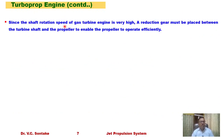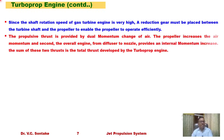Since the shaft rotation speed of a gas turbine engine is very high, a reduction gear must be placed between the turbine shaft and the propeller to enable the propeller to operate efficiently. The propeller thrust is provided by dual momentum change of air: the propeller increases the air momentum, and the overall engine from diffuser to nozzle provides an internal momentum increase. The sum of these two thrusts is the total thrust developed by the turboprop engine.